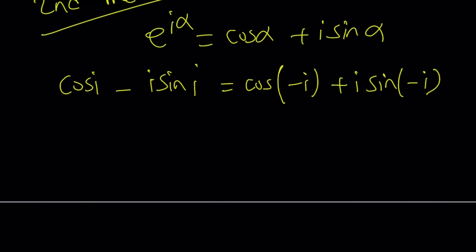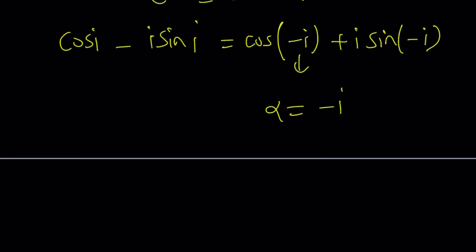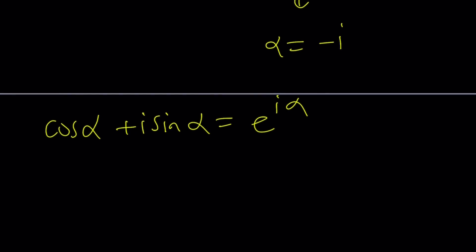So from here, alpha becomes negative i, right? And what do we say about cosine alpha plus i sine alpha? We said this is equal to e to the power i alpha. But if alpha is negative i, then just replace alpha with negative i, i times negative i. That's going to become e to the power negative i squared, which is e to the power 1.